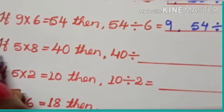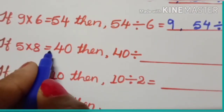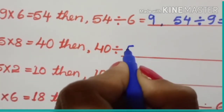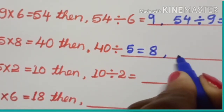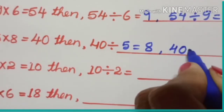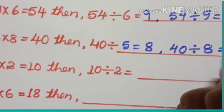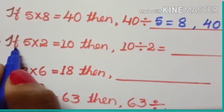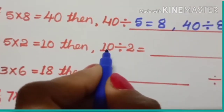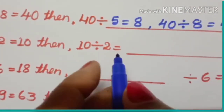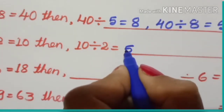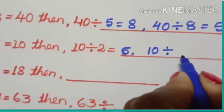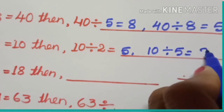Third question: if 5 multiplied by 8 is equal to 40, then 40 divided by 5 is equal to 8, and 40 divided by 8 is equal to 5. Fourth question: if 5 multiplied by 2 is equal to 10, then 10 divided by 2 is equal to 5, and 10 divided by 5 is equal to 2.